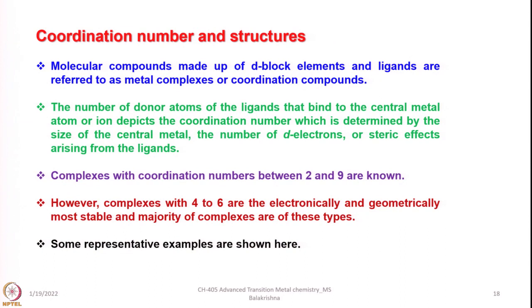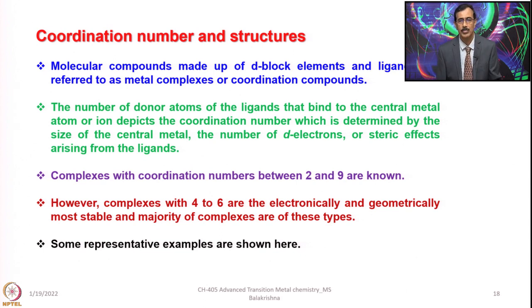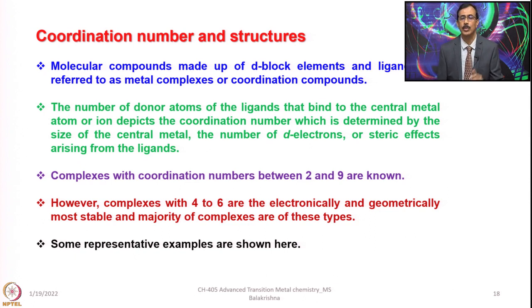Let us discuss some information about coordination number and structure — later we will be discussing these aspects in a more elaborated manner. Molecular compounds made up of D-block elements and ligands are referred to as metal complexes or coordination compounds. In order to call a compound a coordination compound, we should have a transition metal that has bonding to ligands coming from main group elements.